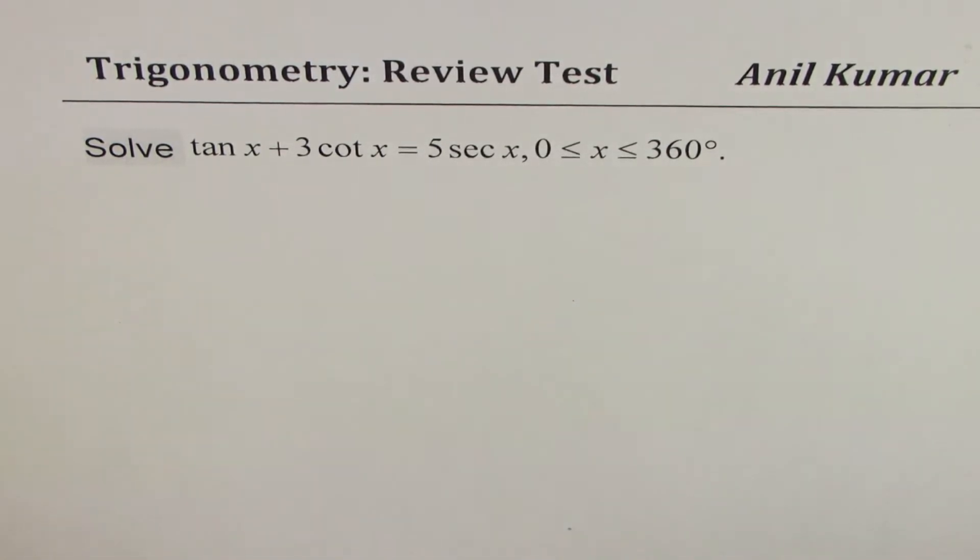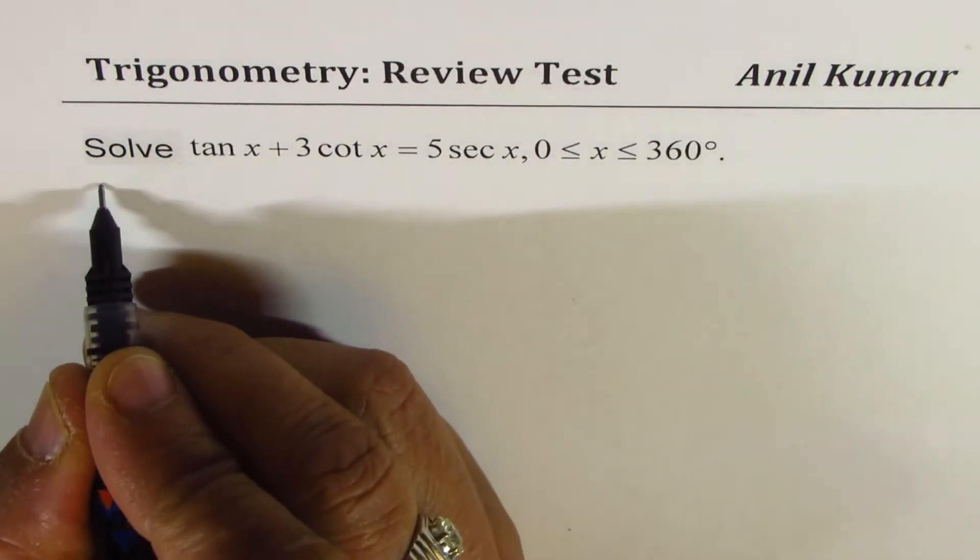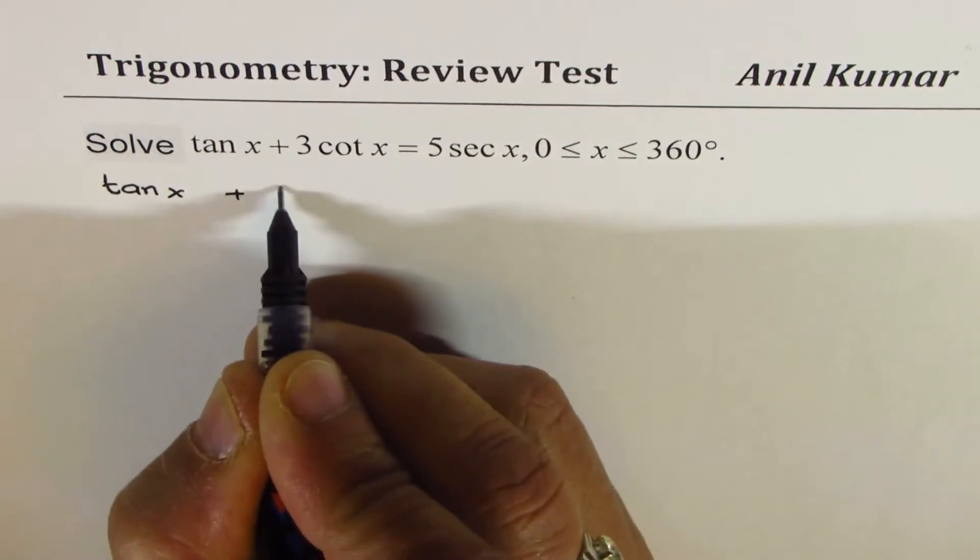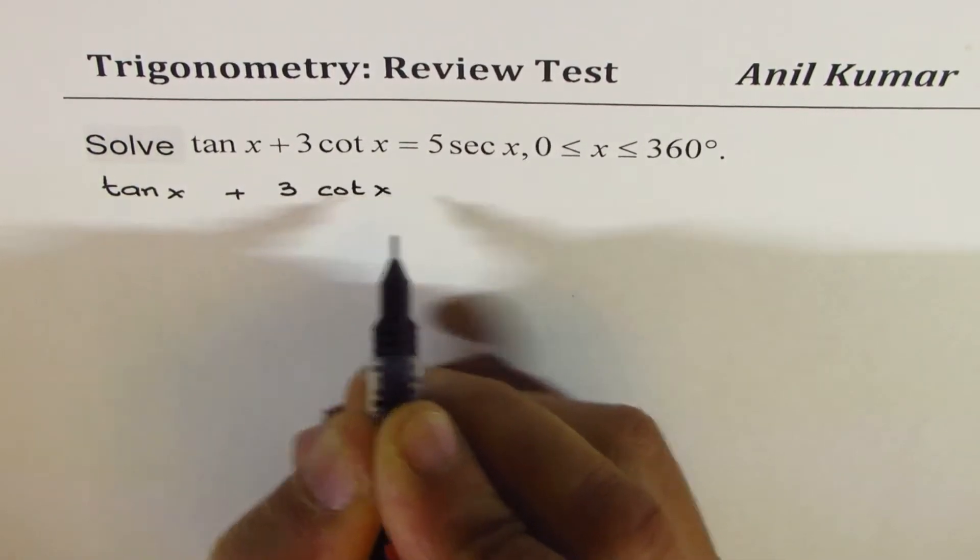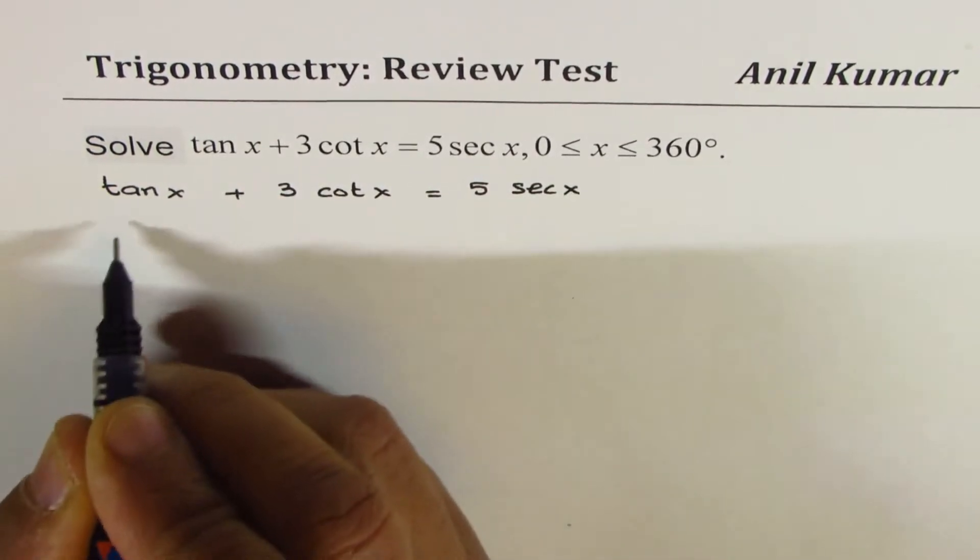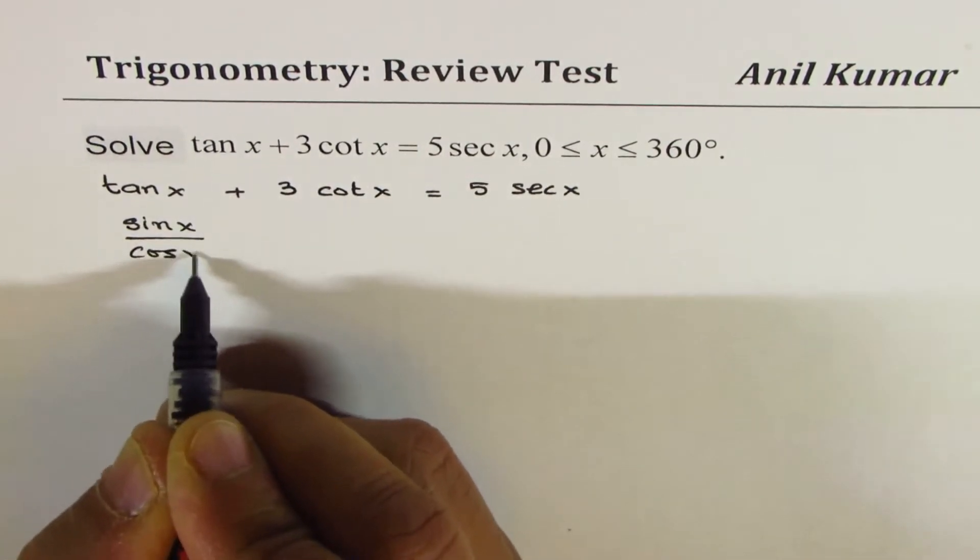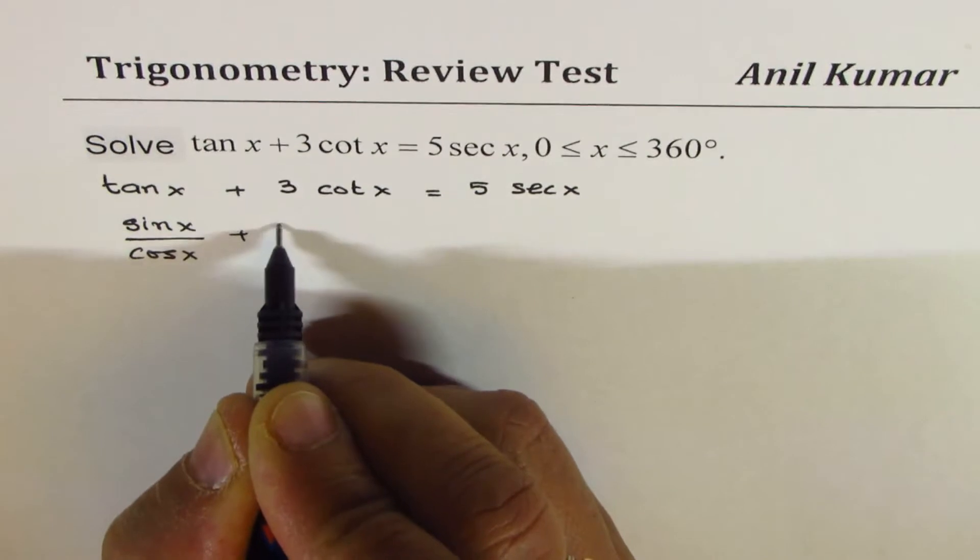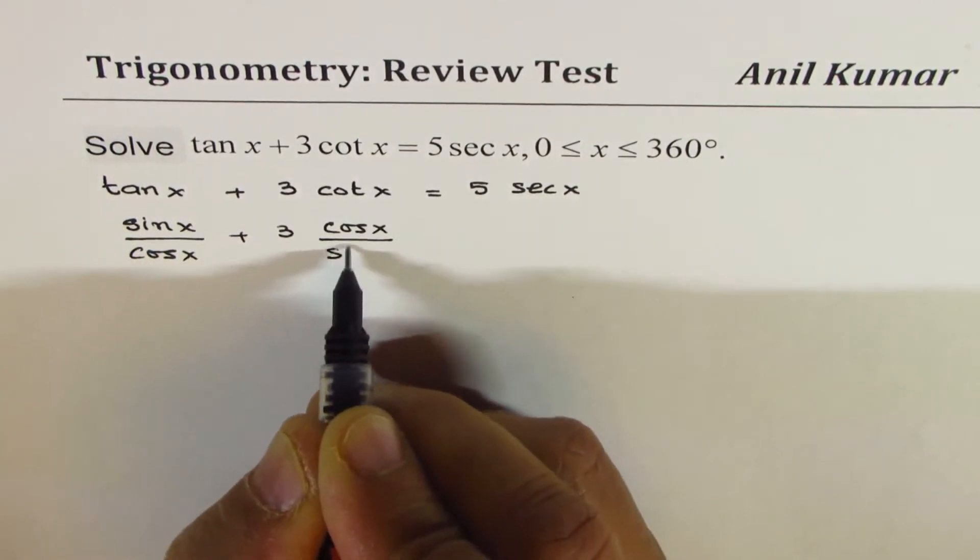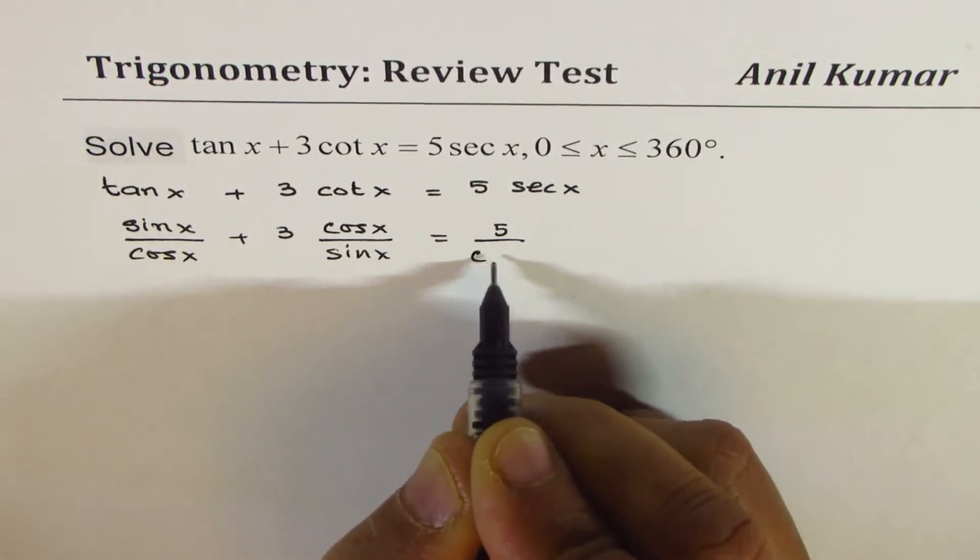We can begin by writing each term in terms of sine and cosine. So the given equation is tan x plus 3 cotangent x equals 5 sec x. Tan is sine over cos, we can write this as sine x over cos x, plus 3 times cot is cos x over sine x, which should be equals to 5 over cos x.